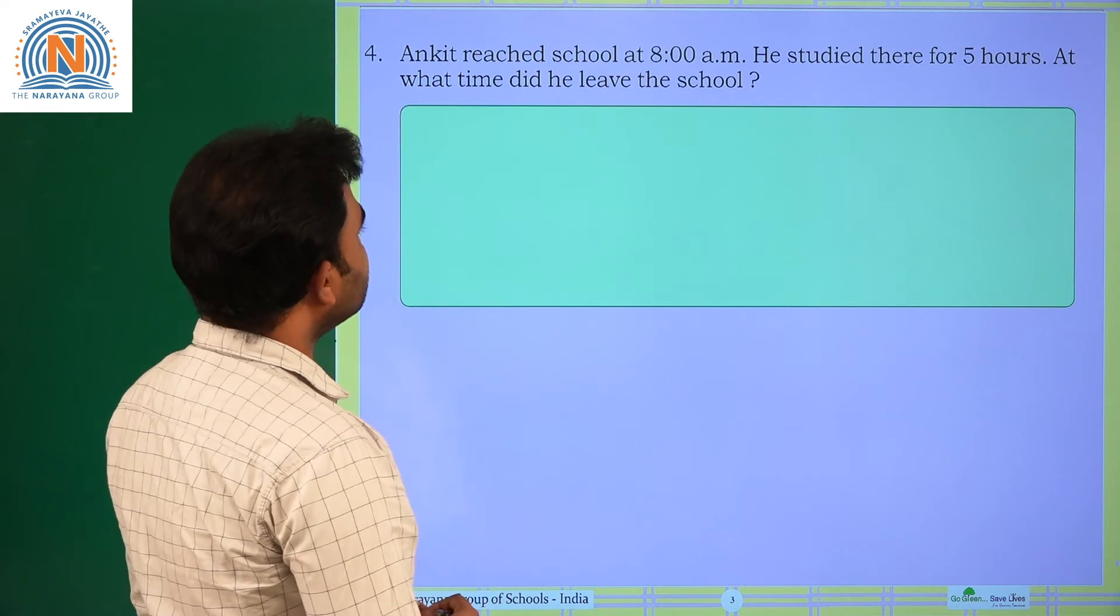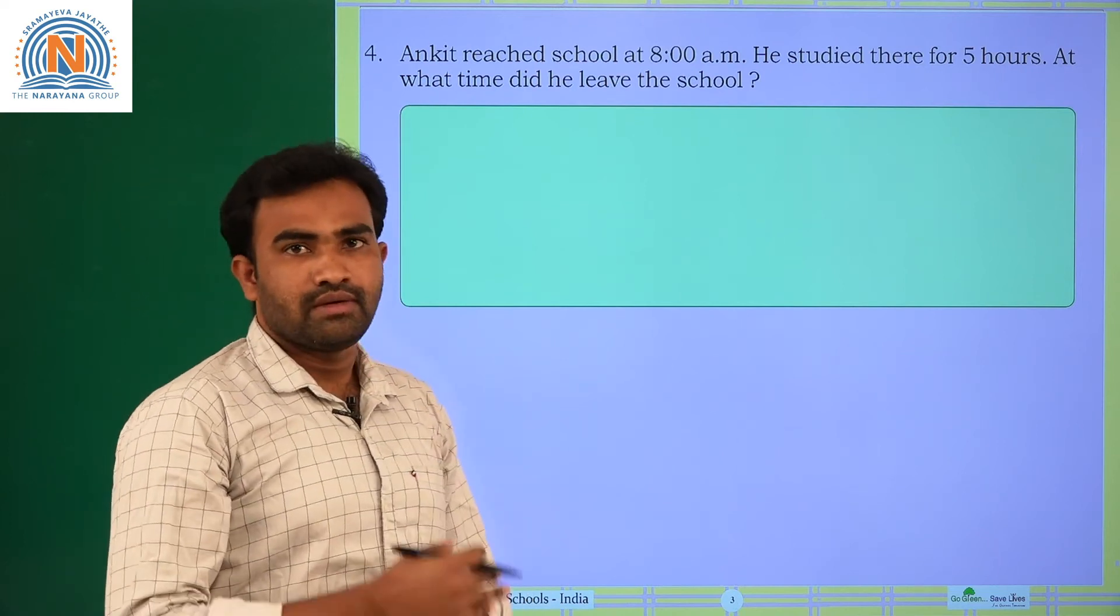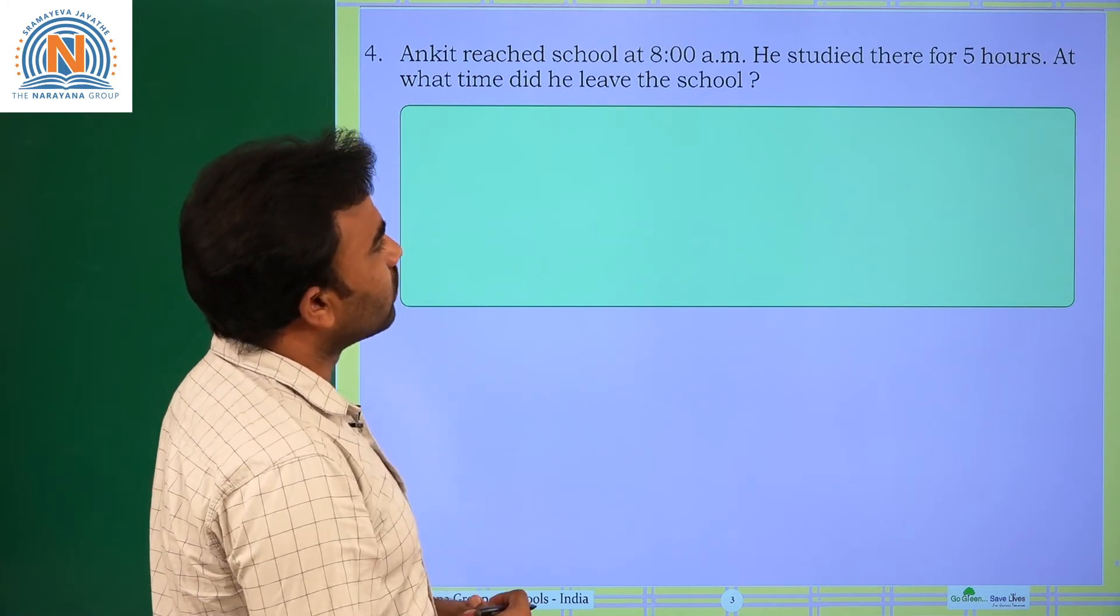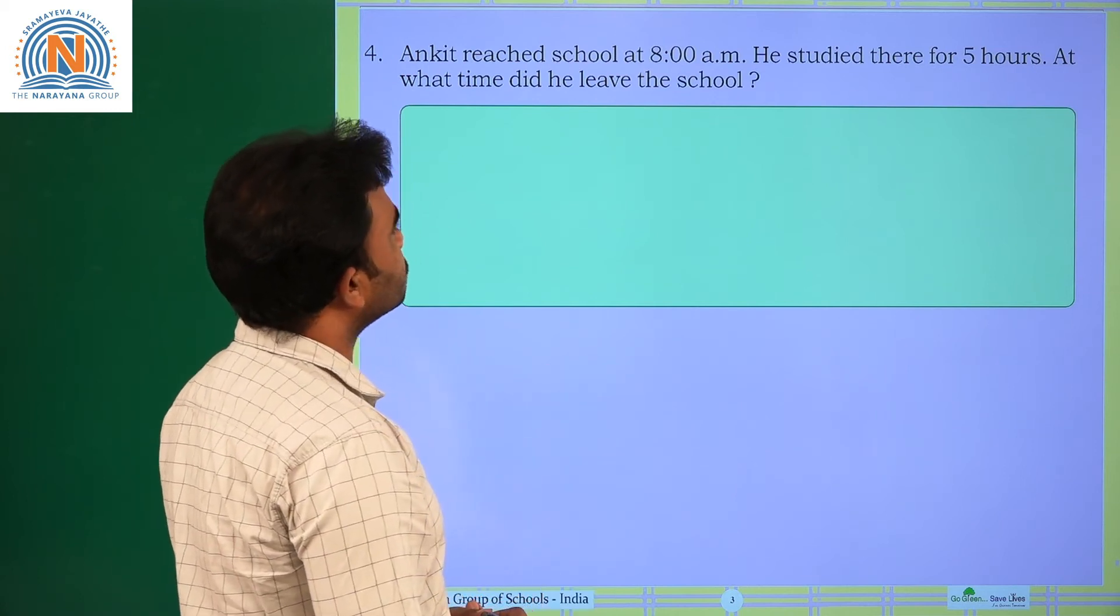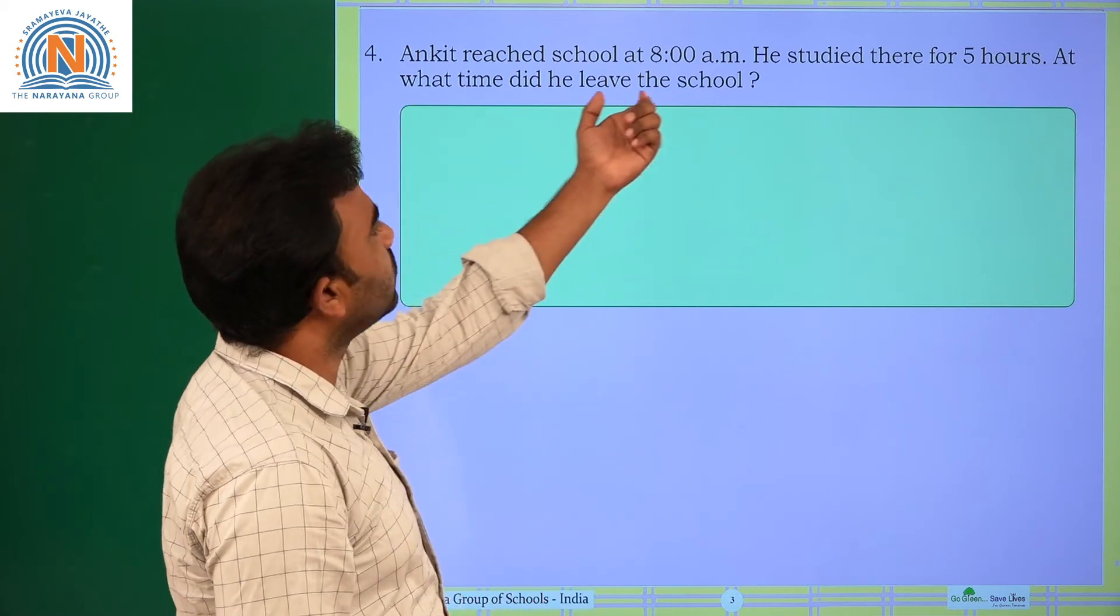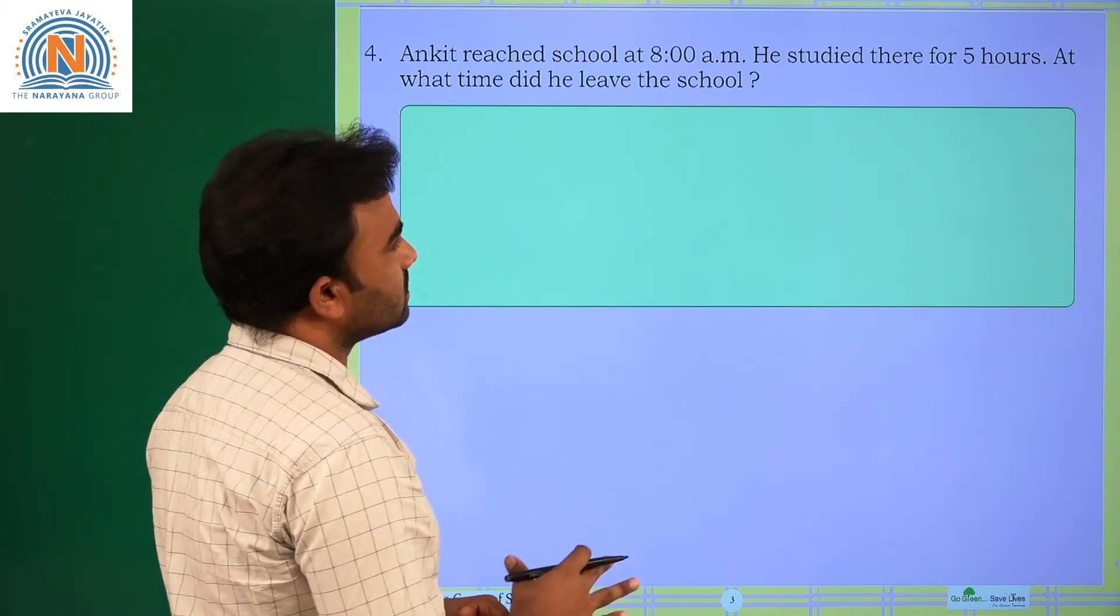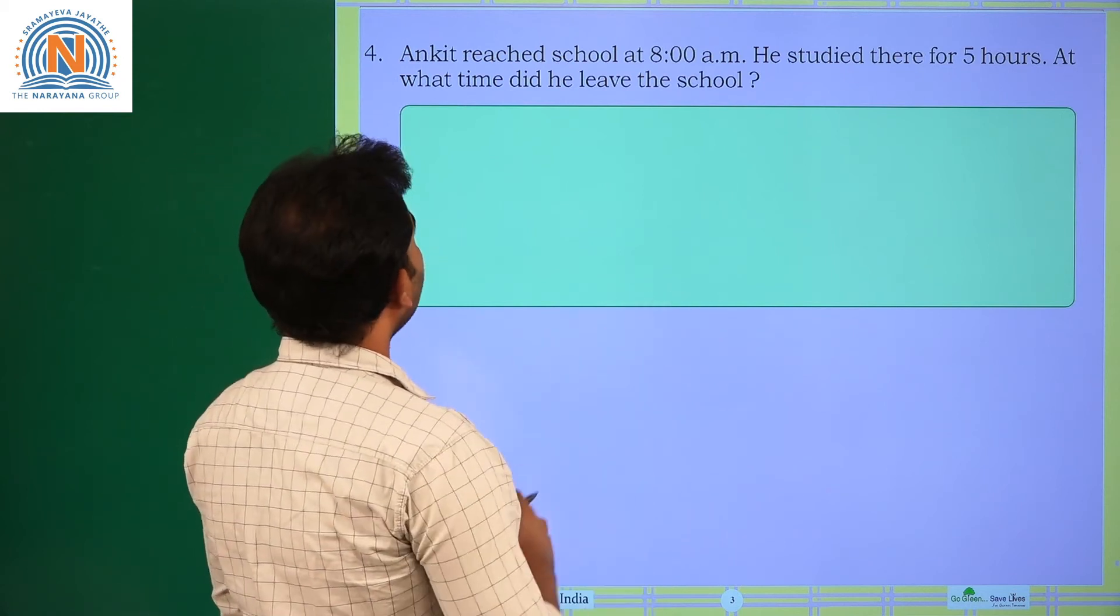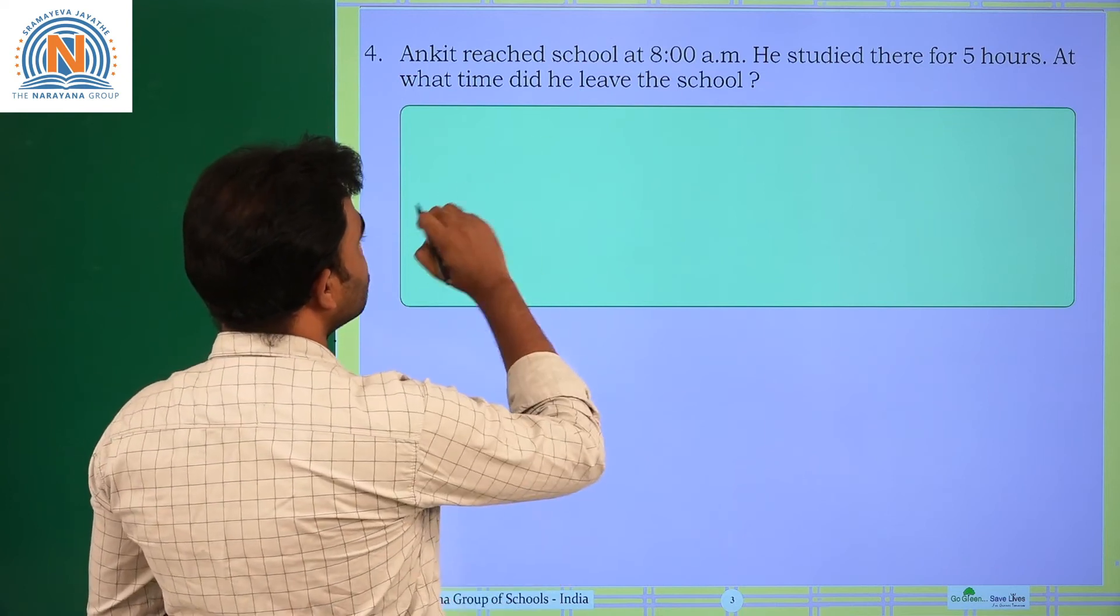Next, Ankit reached school at 8 AM. AM is morning. He studied there for 5 hours. At what time did he leave the school? See, Ankit reached school at 8 AM, which means morning. He studied there for 5 hours. He spent 5 hours in studying. So, at what time did he leave the school?